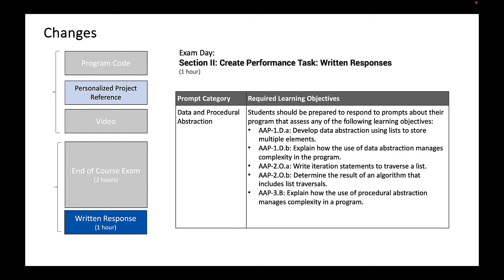Four, data and procedural abstraction. Learning objectives include: develop data abstraction using lists to store multiple elements; explain how the use of data abstraction manages complexity in the program; write iteration statements to traverse a list; determine the result of an algorithm that includes list traversals; explain how the use of procedural abstraction manages complexity in a program. So this whole category is dedicated to lists and list traversals, which is very important now.